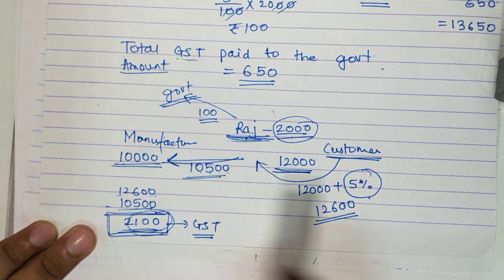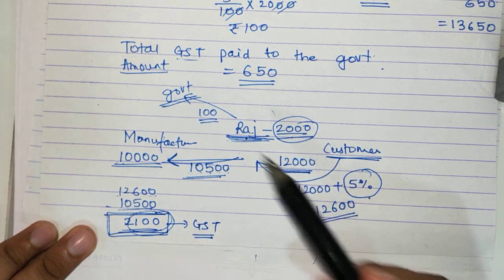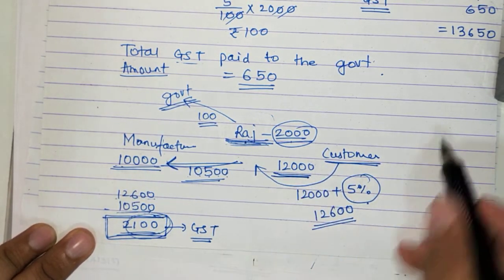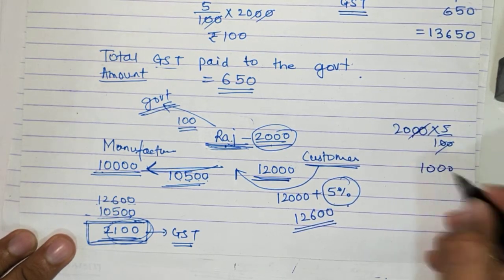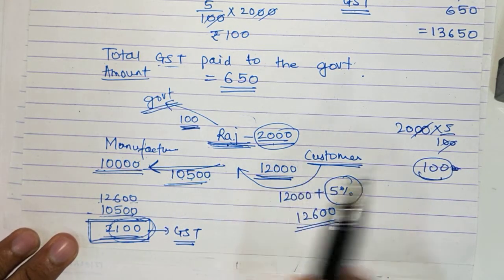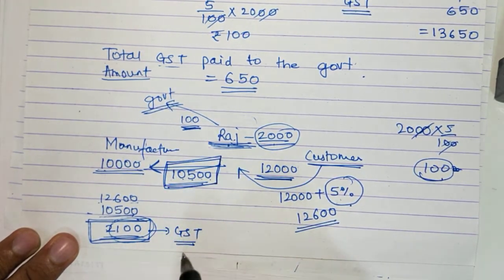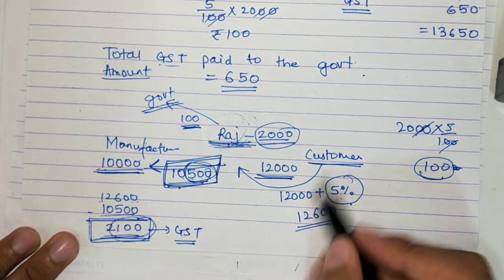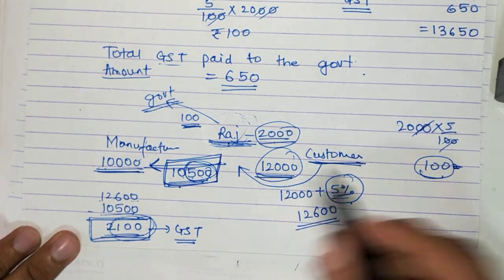So the shortcut is: directly find GST on the profit made. Dealer's profit was Rs. 2,000 (10,000 to 12,000), so 5% of 2,000 = Rs. 100 directly. This example was given so you understand that if the exam asks how much price the dealer paid, the dealer paid 10,000 plus GST. If asked how much the customer paid, it is 12,000 plus GST.